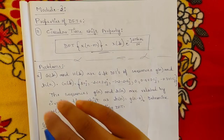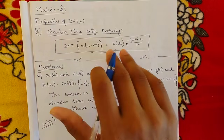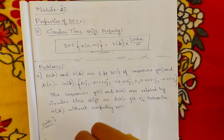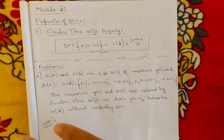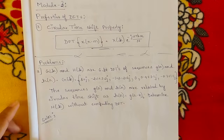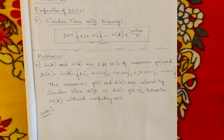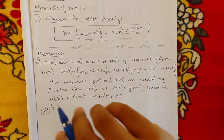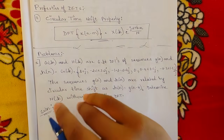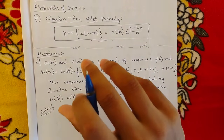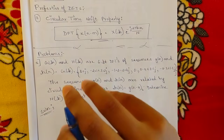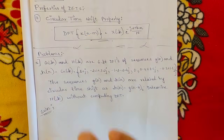In this session we are going to deal with the circular time shift property. I will tell you how the property works with one example problem, which is very important. One question would surely come from circular time shift as well as circular frequency shift. The question would be very tricky — you should be recognizing which property to use and how to solve it.